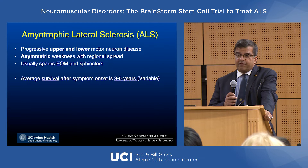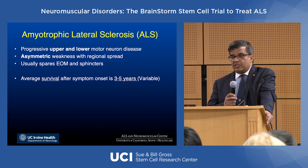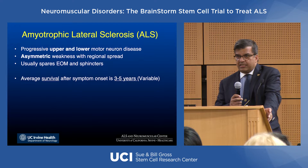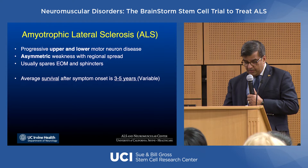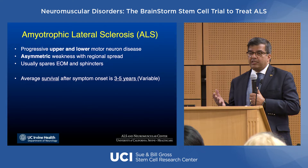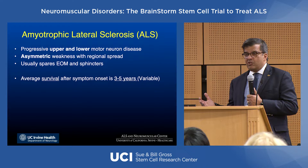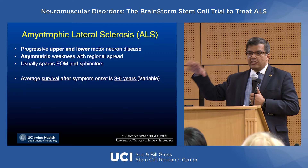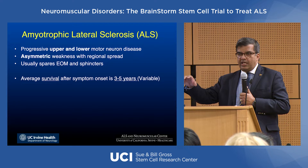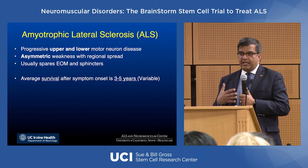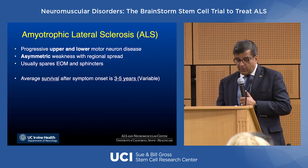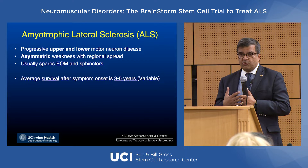ALS is a progressive disease that unfortunately continues to worsen in a fairly relentless fashion. Despite our best efforts and treatment, the disease continues to progress and eventually leads to the patient's death. It's an asymmetric disease, meaning one side is usually affected more than the other. There is also a concept of regional spread — the disease moves from one portion of the nervous system to the next in a contiguous fashion. This is a new concept that has really changed how we think about neurodegenerative diseases. It typically spares the eye and sphincter muscles.